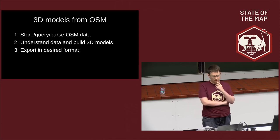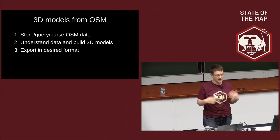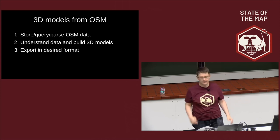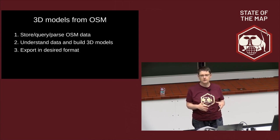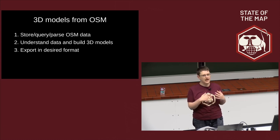The mission of OSM2World is creating 3D models from OpenStreetMap in three simple steps: first, store OpenStreetMap data in some kind of suitable storage and query or parse it; second, understand the data and the various tagging conventions that exist to build 3D models from it; and finally, export it into the desired target format.